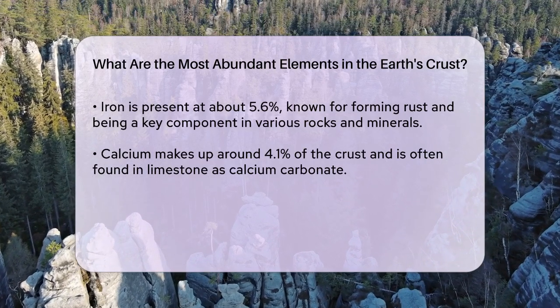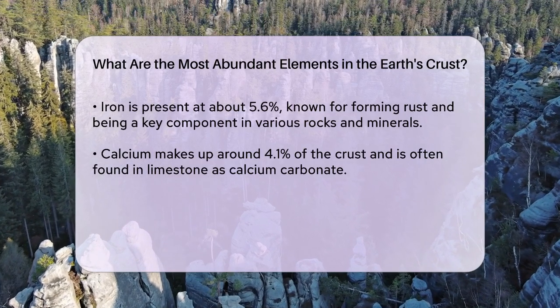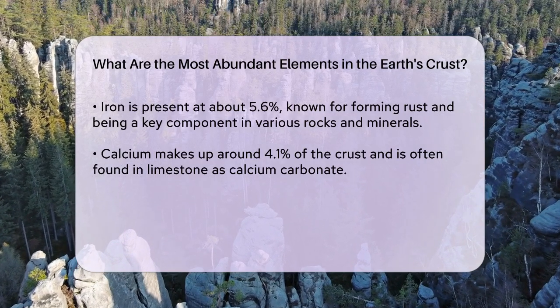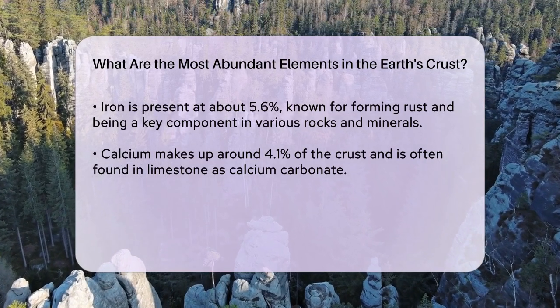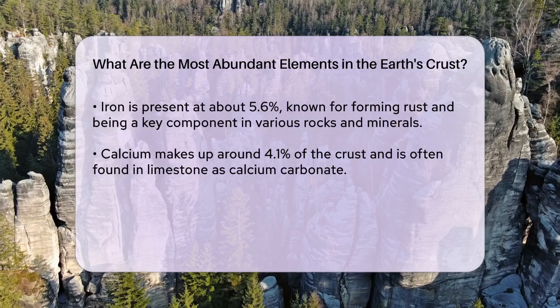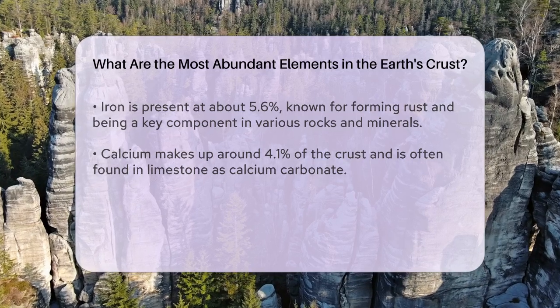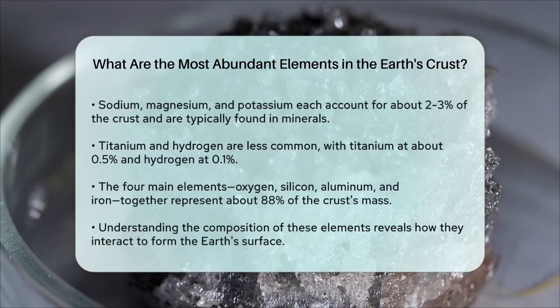Titanium and hydrogen are less abundant but still important, with titanium making up about 0.5% and hydrogen about 0.1% of the Earth's crust.